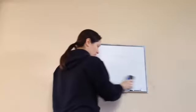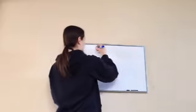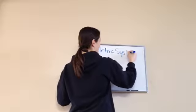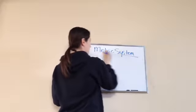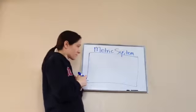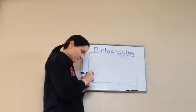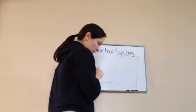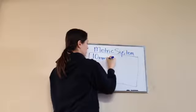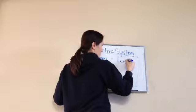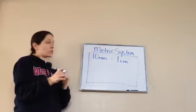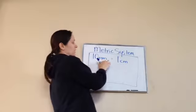Now underneath that, I want you to write the metric system. The metric system: 10 millimeters equals 1 centimeter. We saw that on a ruler when we turned it from inches to centimeters — 10 millimeters equals 1 centimeter.